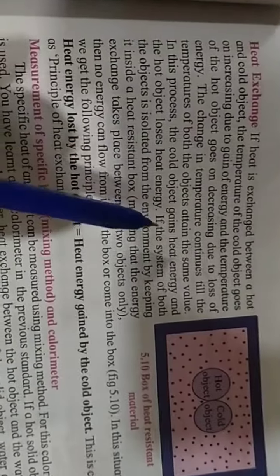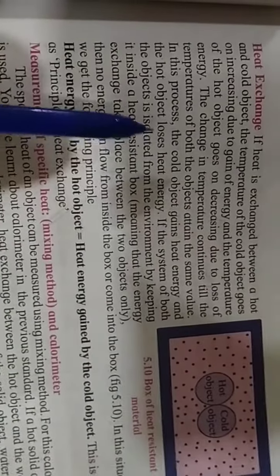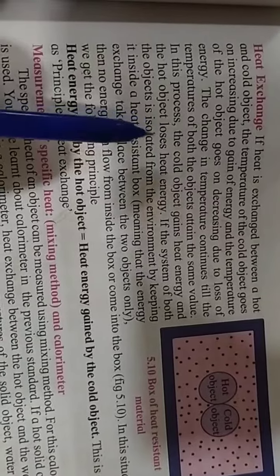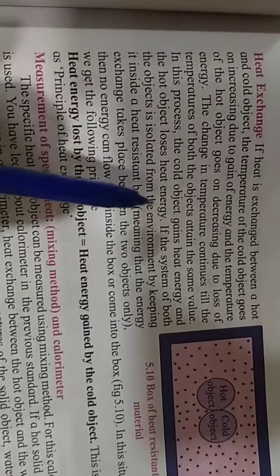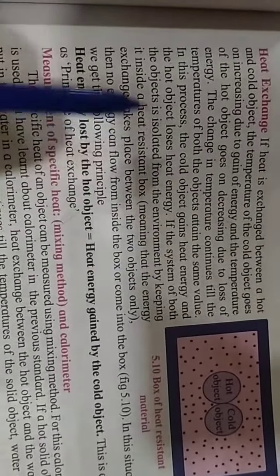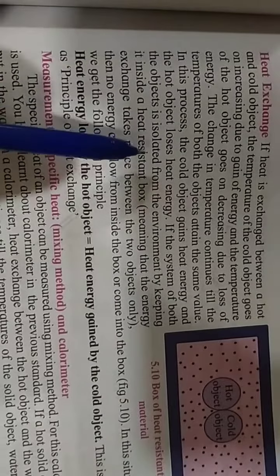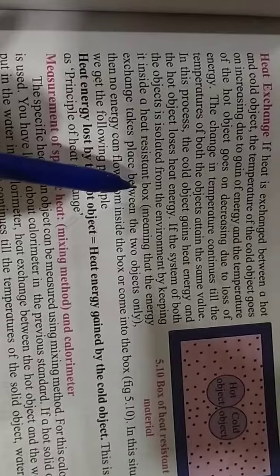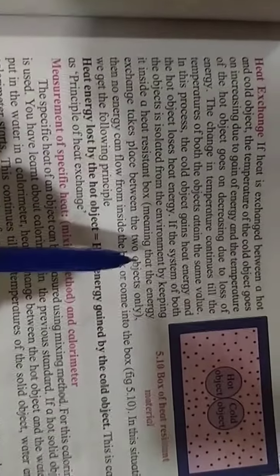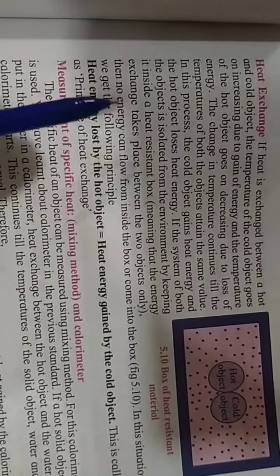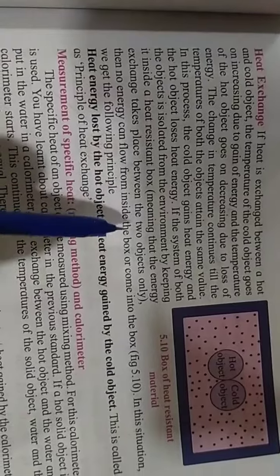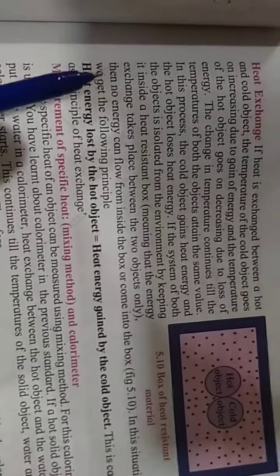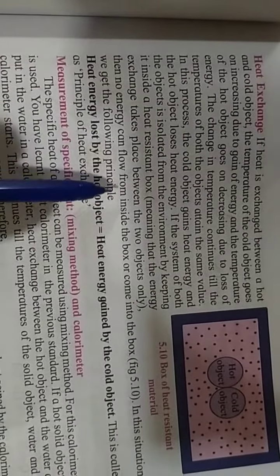The cold object gains heat energy and the hot object gives its heat energy to the cold object. If the system with both objects is isolated from the environment by keeping it inside a heat resistant box, meaning that energy exchange takes place between the two objects only, then no energy can flow from inside the box or come into the box.